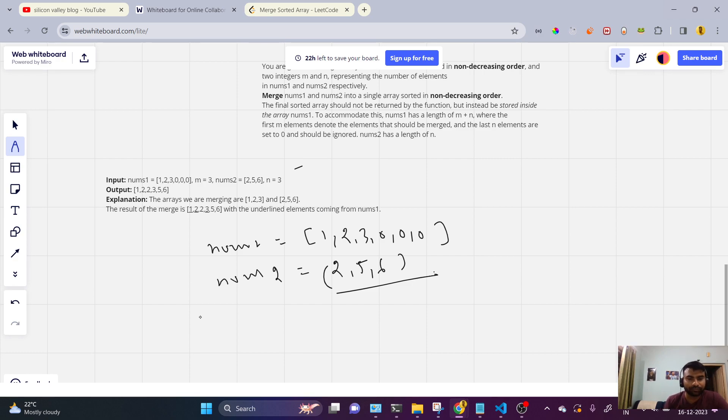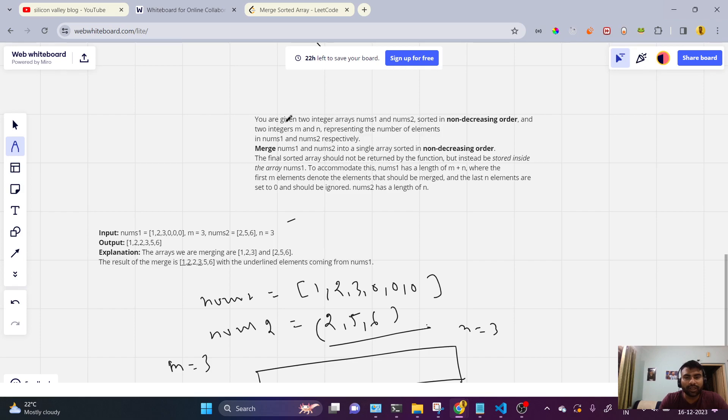And what is the thing here? So merging array we will be constructing and what is the space here? Three, so m is 3 and n is 3. So we'll read the description here. You are given two integer arrays nums1 and nums2 sorted in non-decreasing order and two integers m and n.